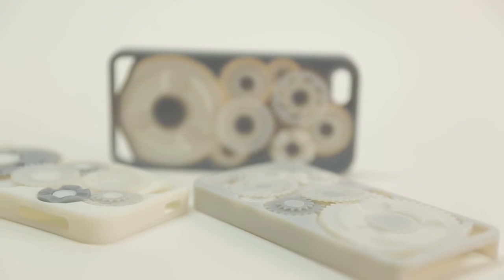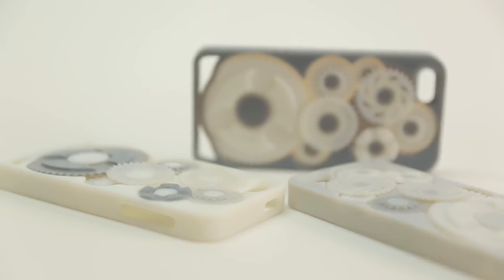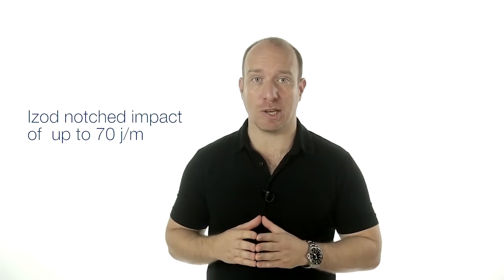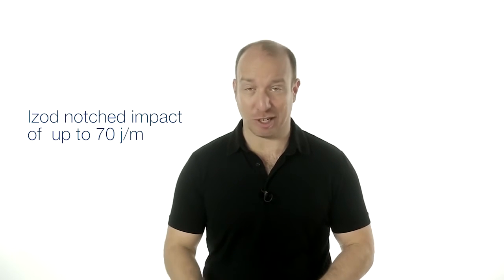And there's a great tip here if you need a really tough digital material. Combine Rigger with Tangos to create RGD4625 and RGD4630, for example, and you get an ISO notched impact of up to 70 joules per meter. That's approaching the performance of digital ABS.